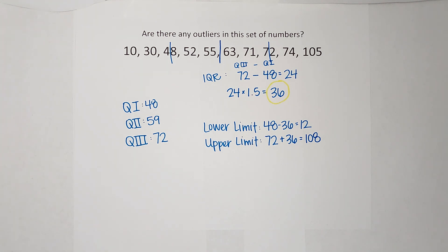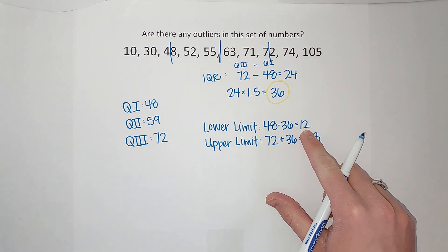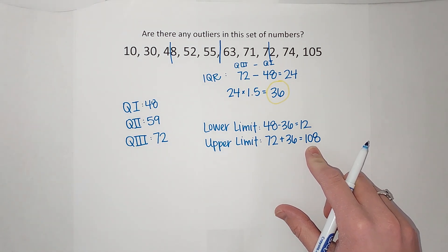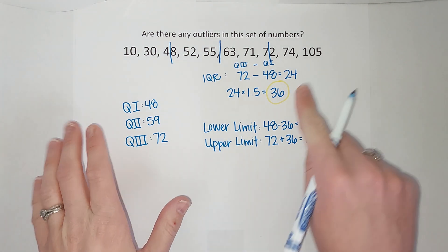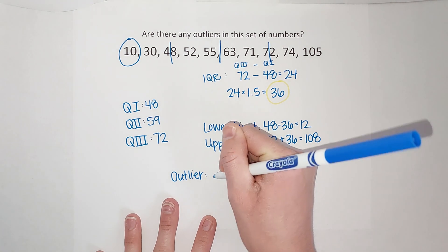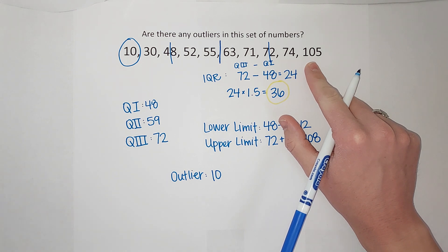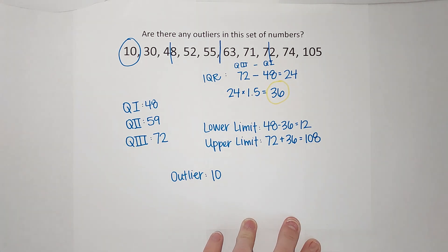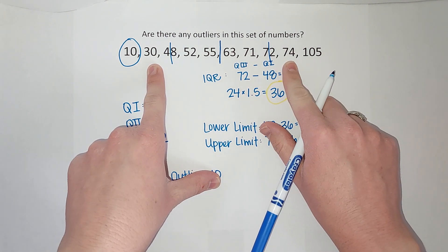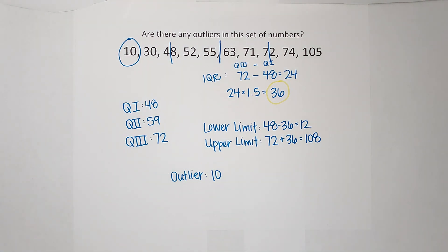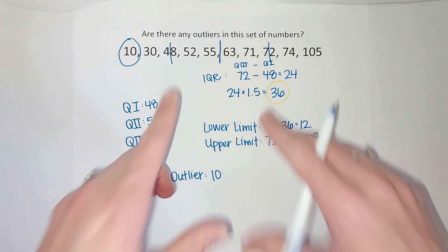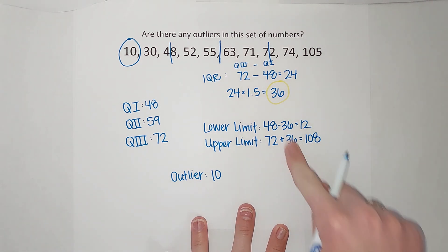What this tells me is: anything lower than 12, my lower limit, is going to be considered an outlier. Anything higher than 108, my upper limit, is going to be considered an outlier. Looking at our list of numbers, 10 is lower than 12, so 10 is an outlier. Now, 105 looks pretty far away from the other numbers, but it's still within the limits, so 105 is not an outlier. You might think 10 is closer to 30 than 105 is to 74, so why is 10 an outlier and not 105? It's not about how close it is to the number next to it — it's about how close it is to the quartile closest to it. That's why it's all about these limits.